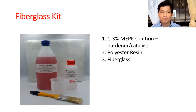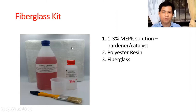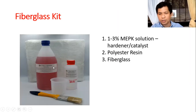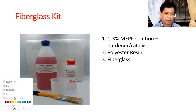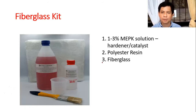This is the fiberglass kit. It contains the fiberglass mat — this fibrous material — and the polyester resin. These are monomers. Esters are derivatives of carboxylic acid, if you remember your organic chemistry.